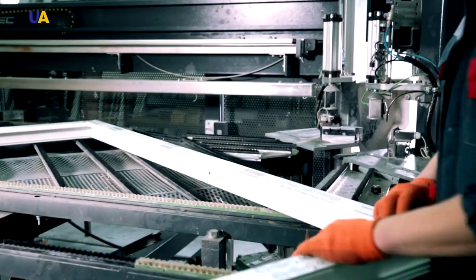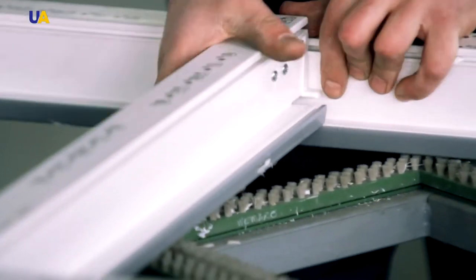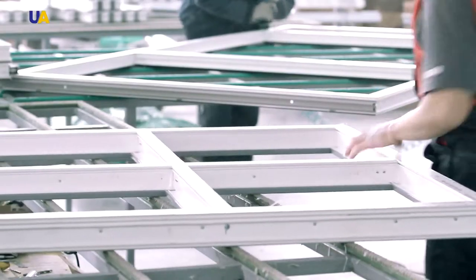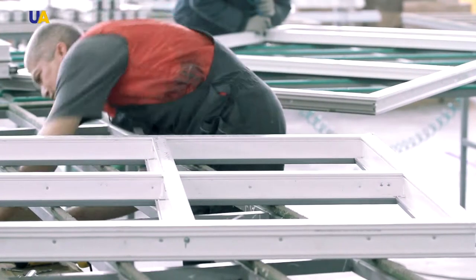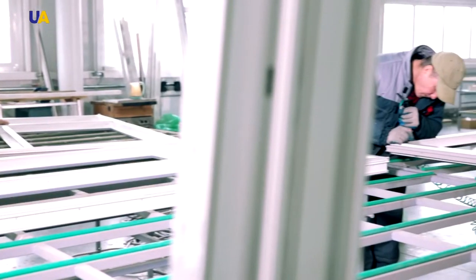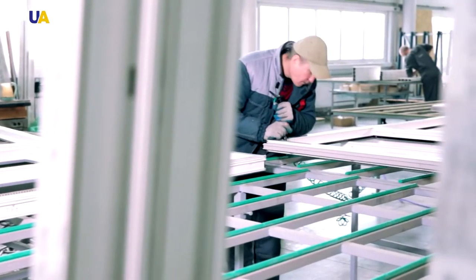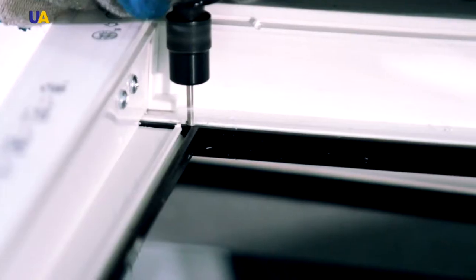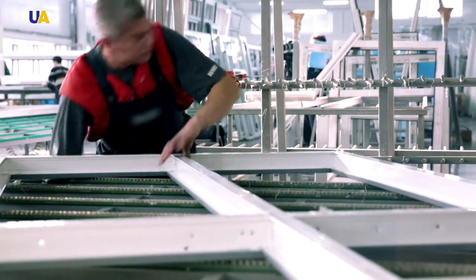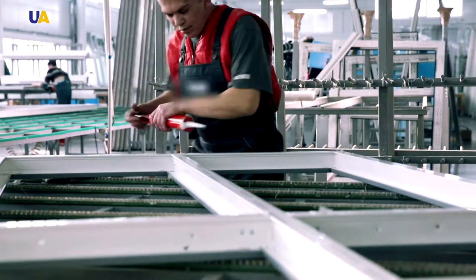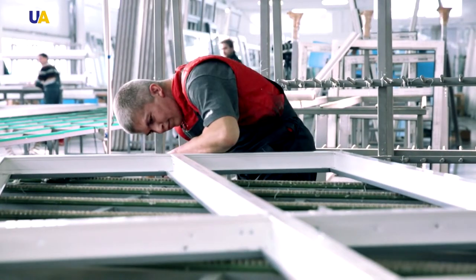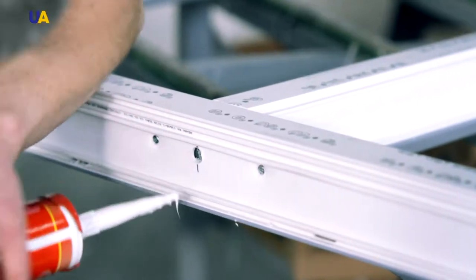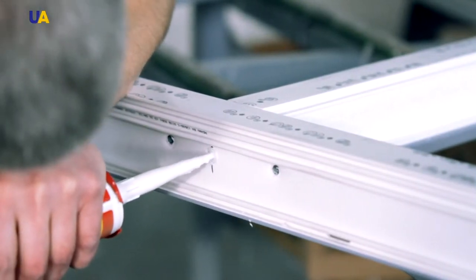After the workpieces are welded and cleaned, it's time to install functional partitions that divide the window into separate parts, deaf and open. This stage of the production process is difficult to automate, so here the work is mostly performed manually. To ensure the integrity of the individual sections so that moisture does not flow into the deaf and does not fall into the window sill, silicone is applied.